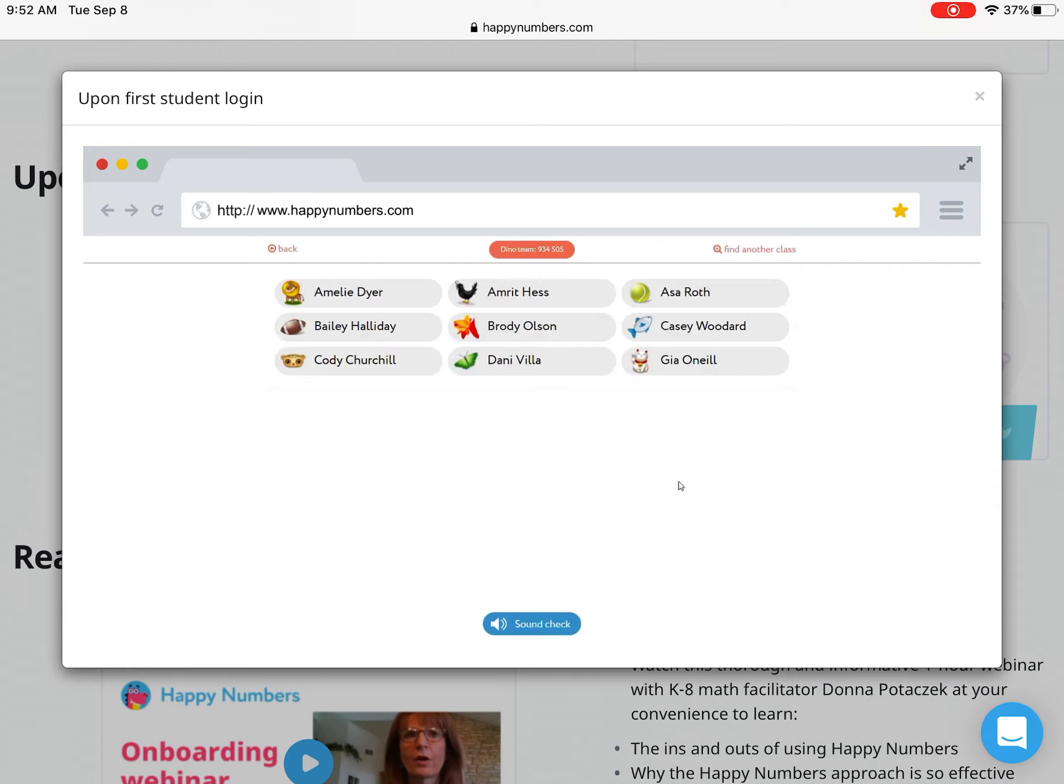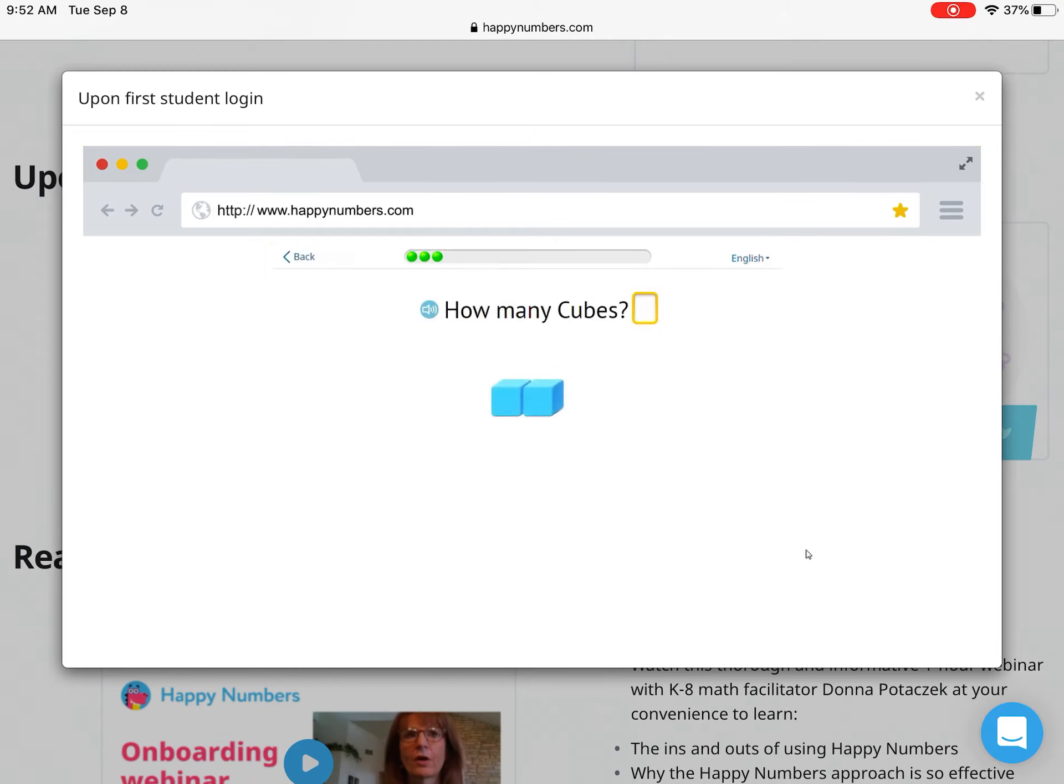Once you enter the class number, the class roster will appear. This is a good time to try the sound check feature at the bottom of the page. To hear any Happy Numbers text read aloud, just click on the blue speaker next to the text. Independent readers can skip this feature.